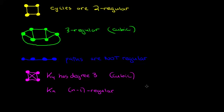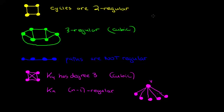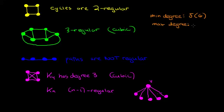That's easy to see: in the complete graph of order n, any particular vertex v has to be adjacent to every other vertex by definition, so it's adjacent to n minus one other vertices. Finally, we have two useful pieces of notation dealing with degrees. We denote the minimum degree by small delta of G, and the maximum degree by capital delta of G. If you have an r-regular graph, then the minimum degree equals the maximum degree, and in fact both equal r.